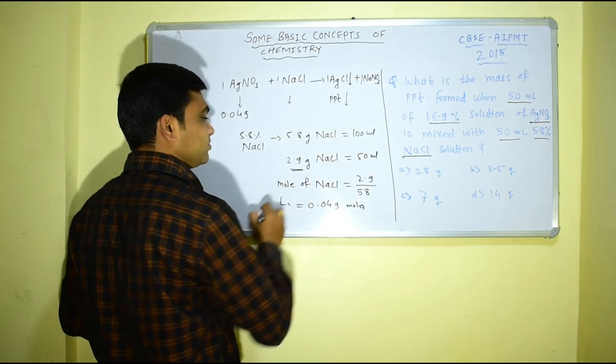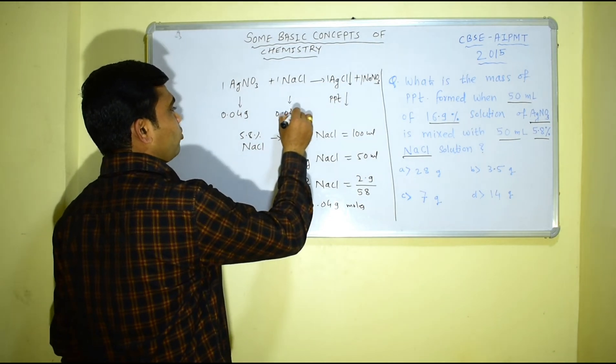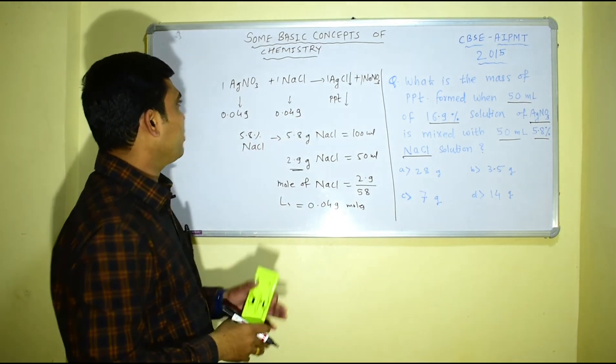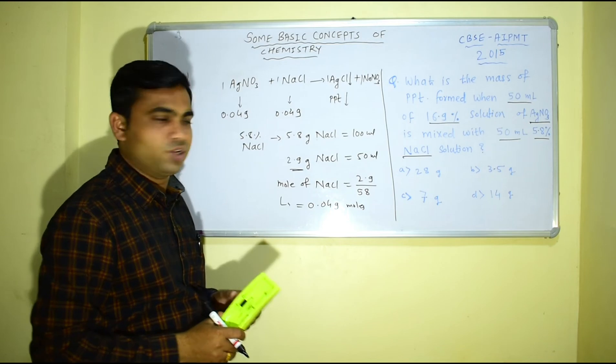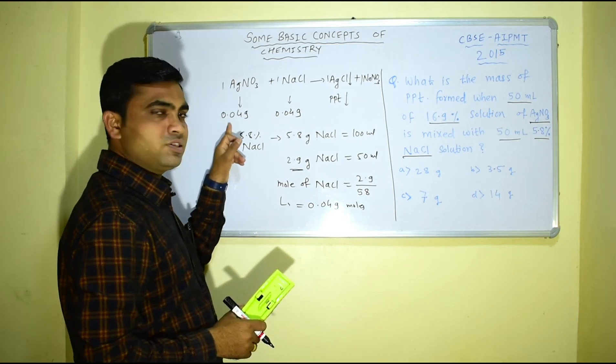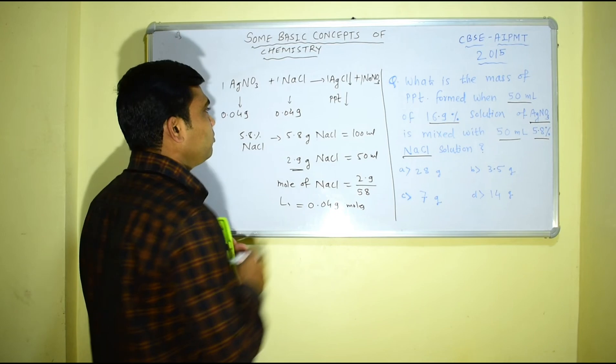So I have 0.049 moles of NaCl as well as 0.049 mole of AgNO3. So obviously one mole of this gives you one mole of AgCl, therefore 0.049 mole gives you 0.049 moles of AgCl.